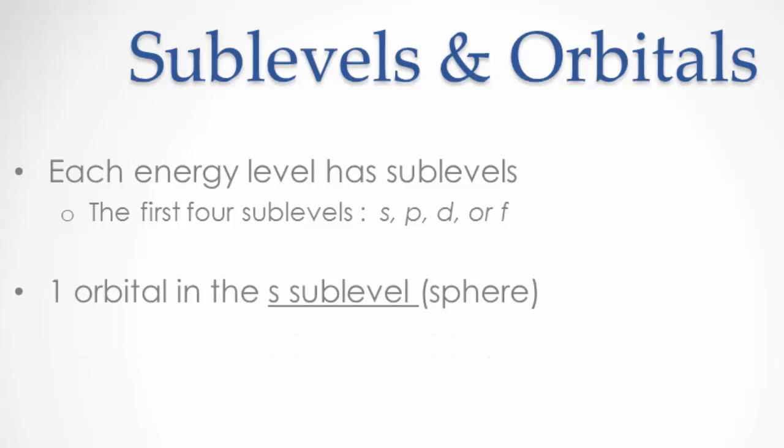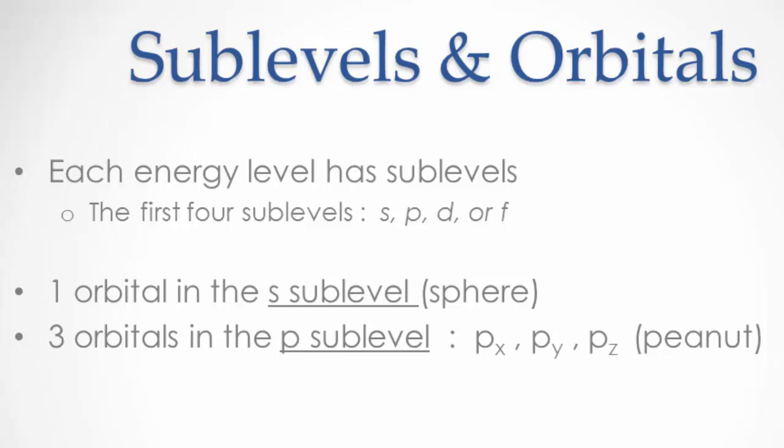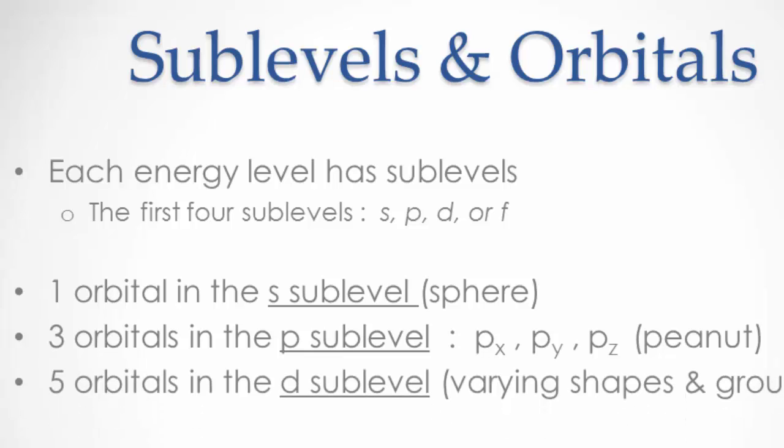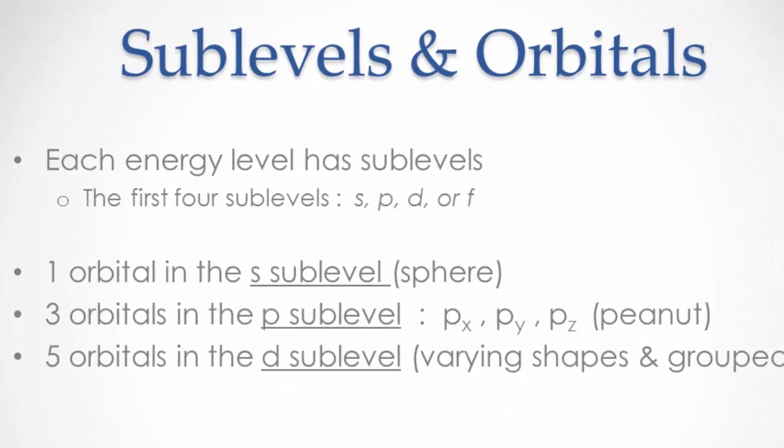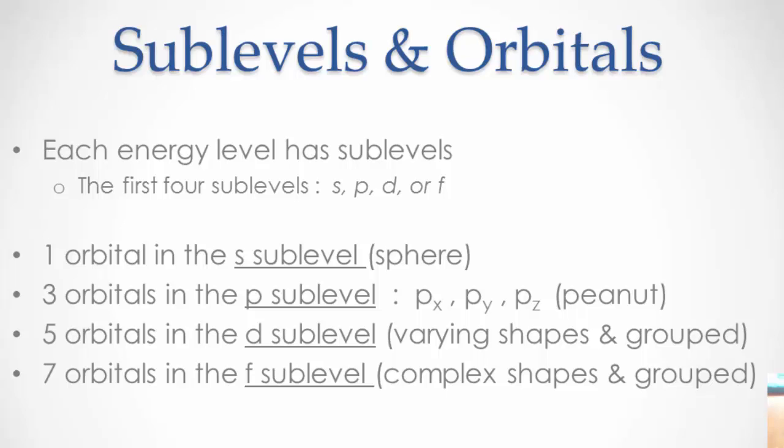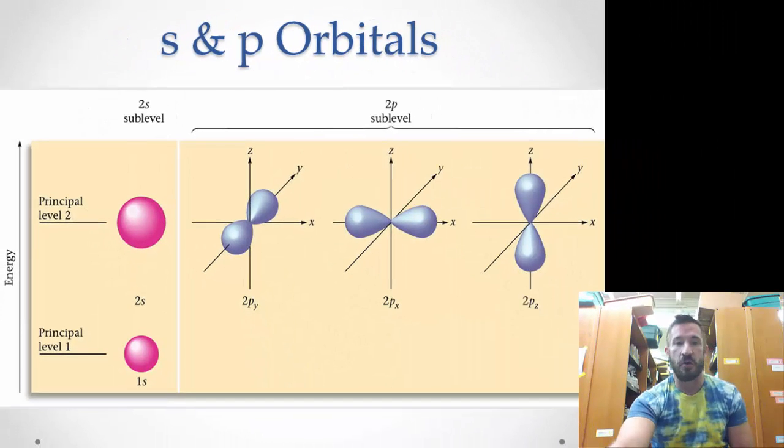One orbital in the S sublevel is spherical. Then there's three orbitals in the P sublevel—those are Px, Py, and Pz, and those actually look like a peanut. The Ds are a varying shape, and the Fs are extremely complex and grouped.